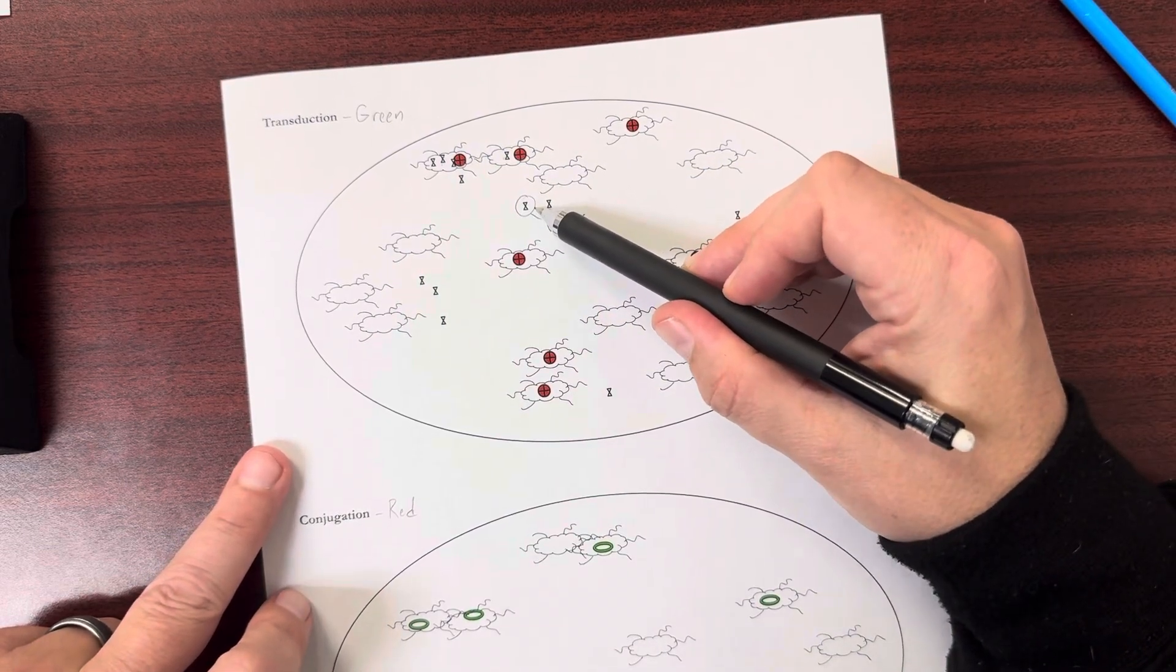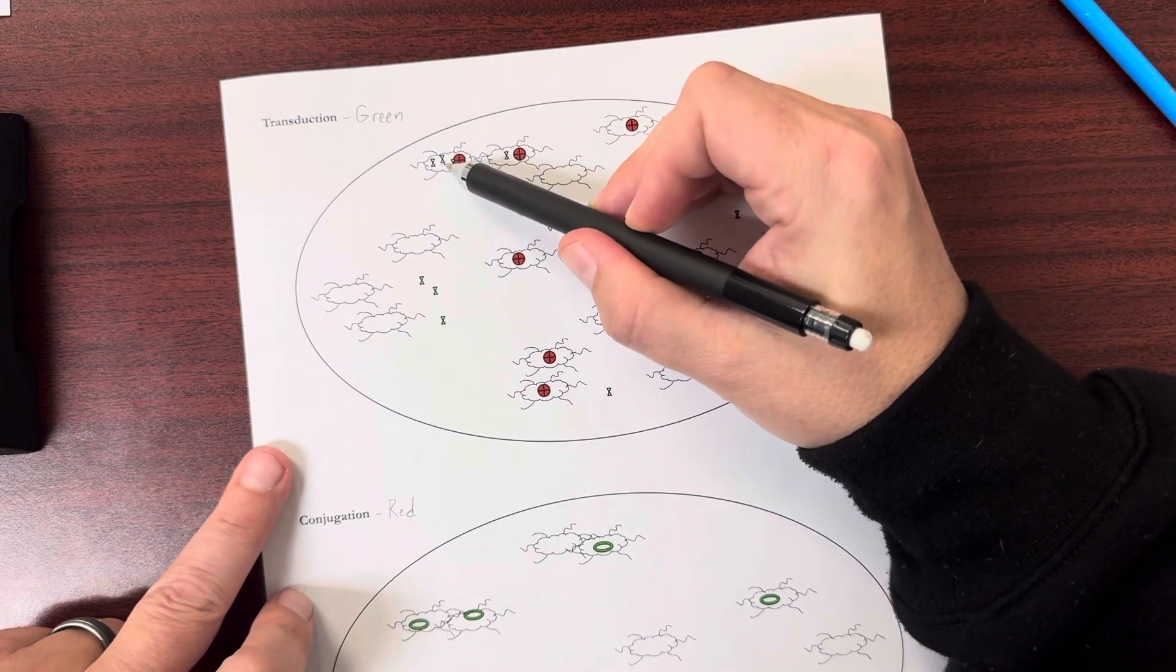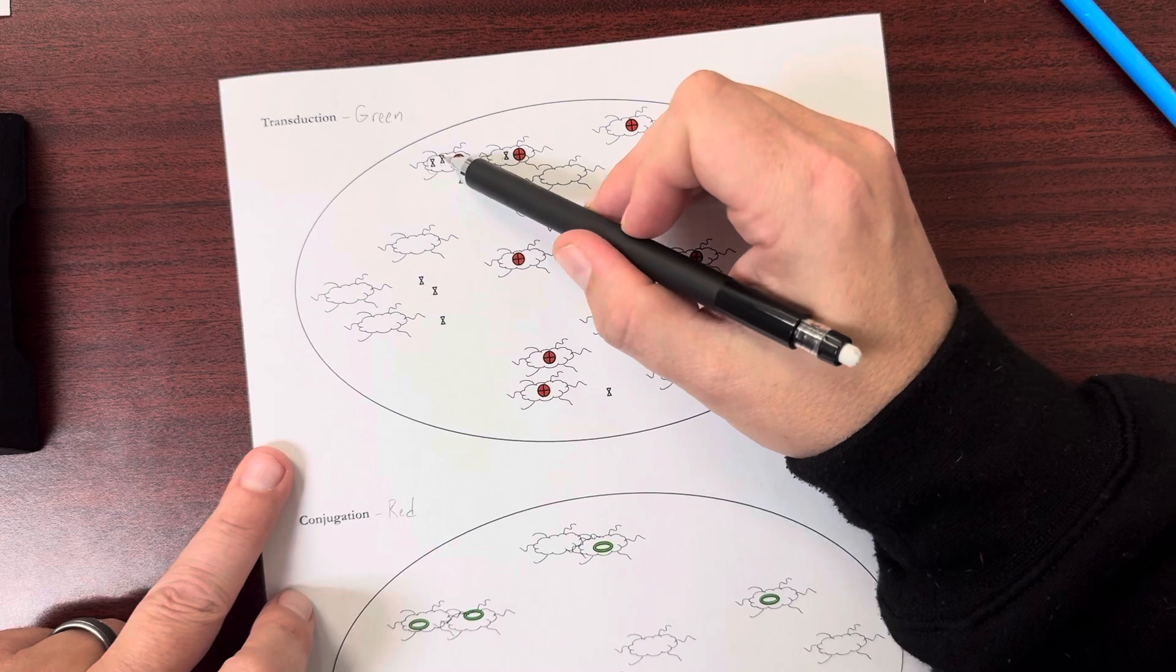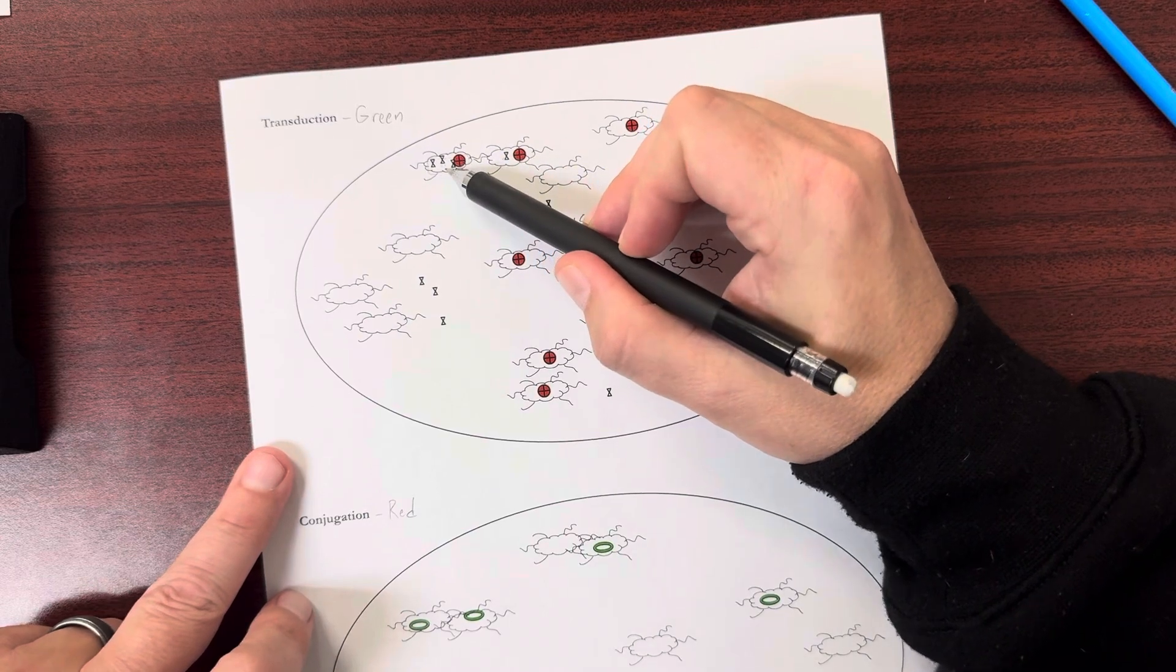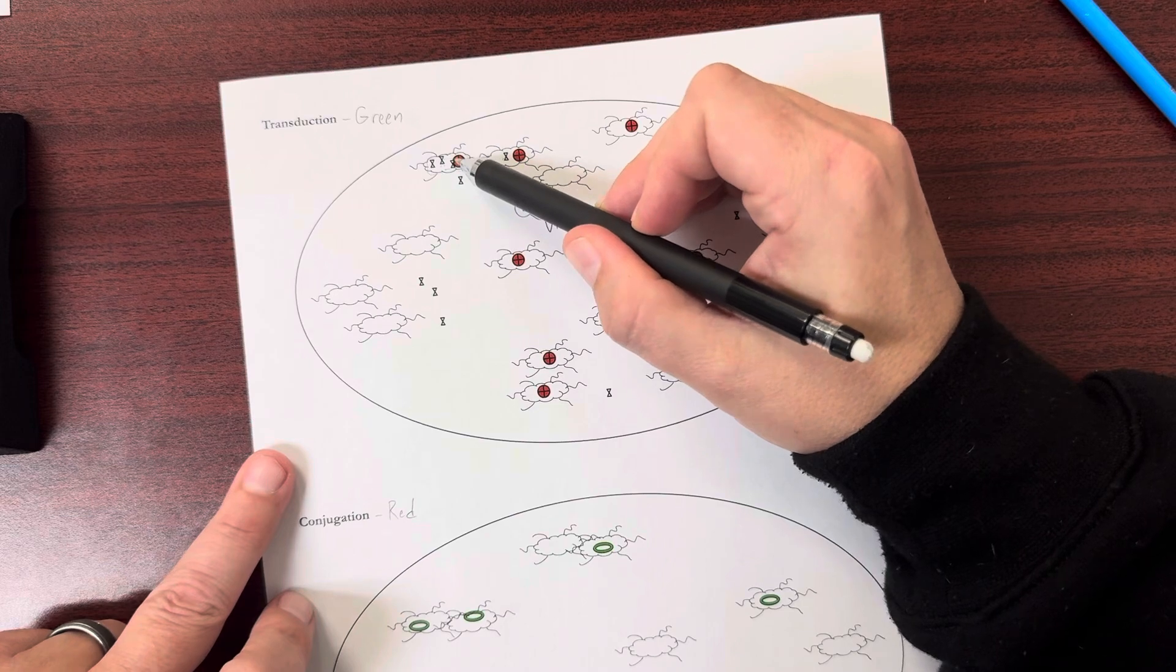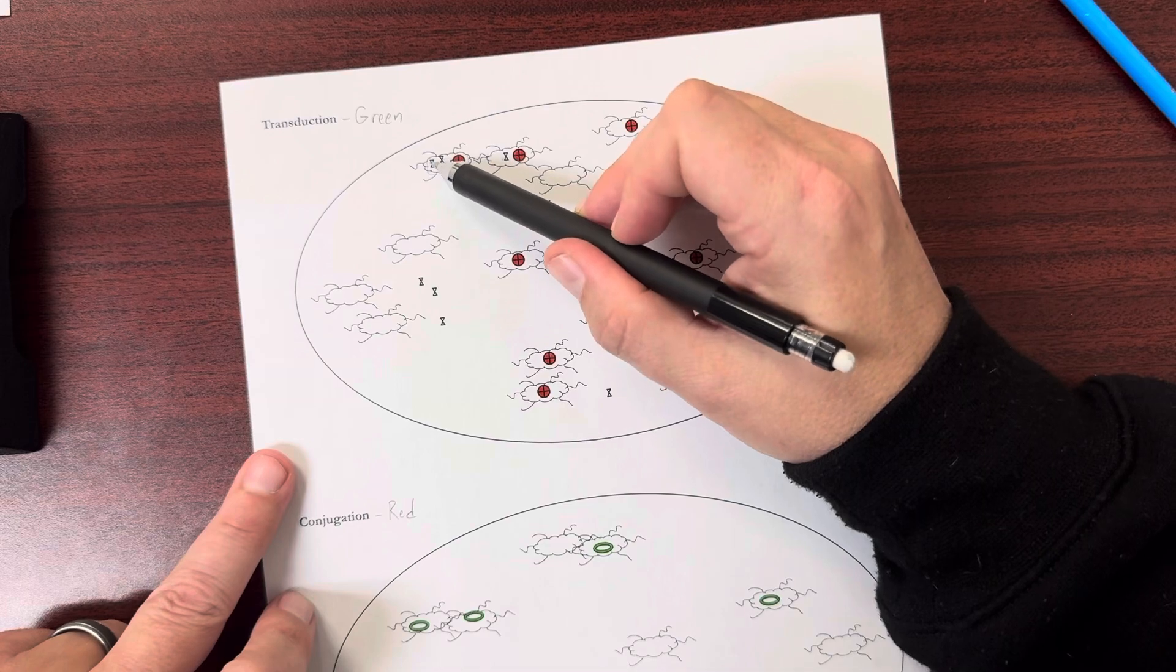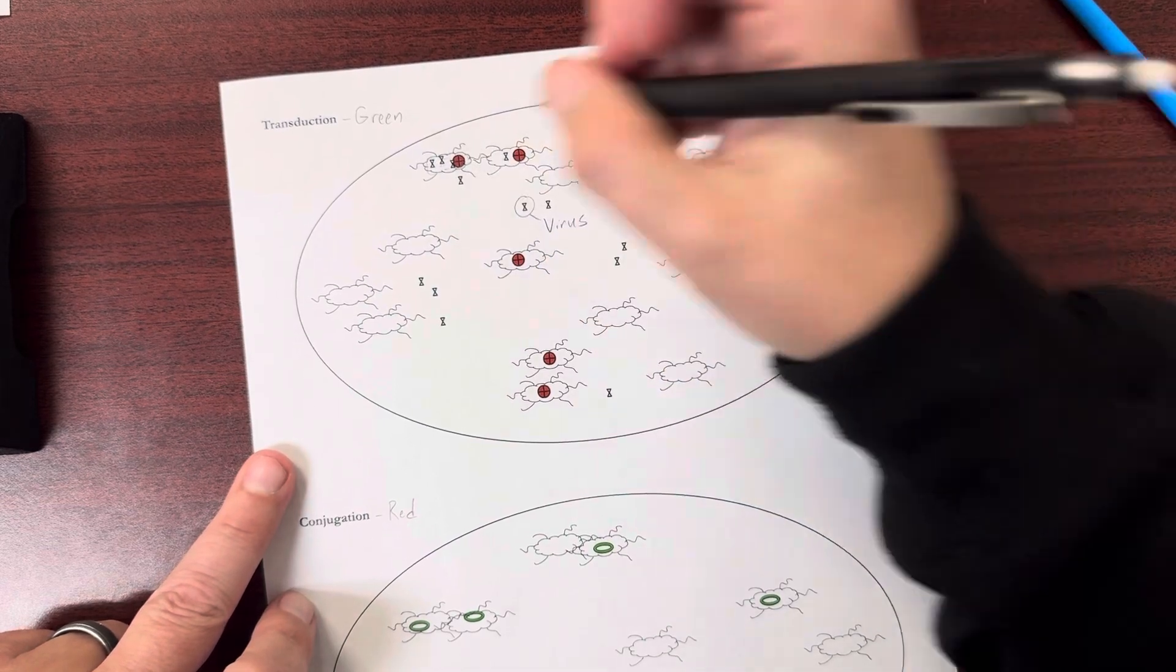And those viruses can transfer DNA to bacteria. So you see the viruses inside of this bacterial cell. They transferred some DNA in here. And the product of that is this red circle that I've made. So that's the product of the DNA that was transferred from virus to bacteria.